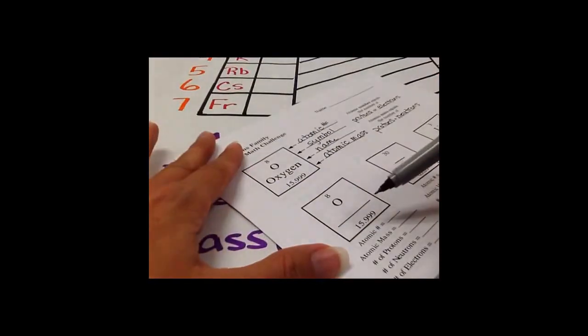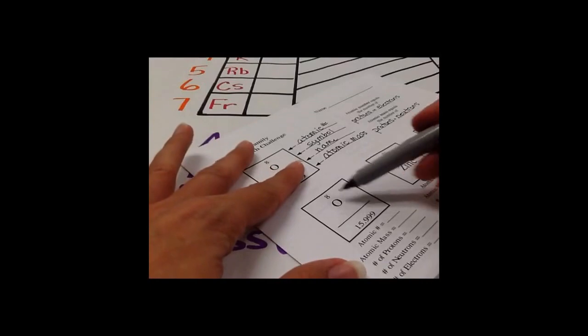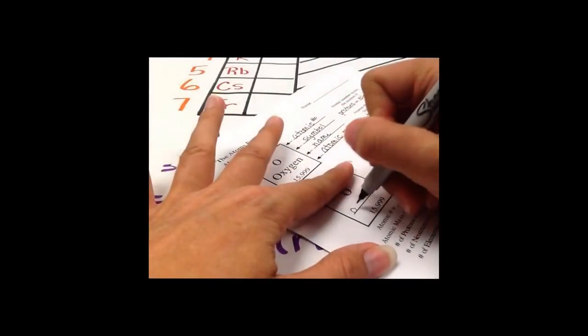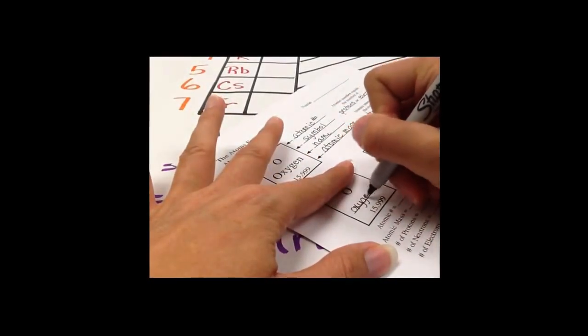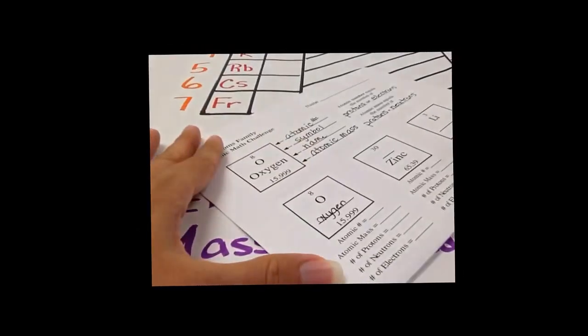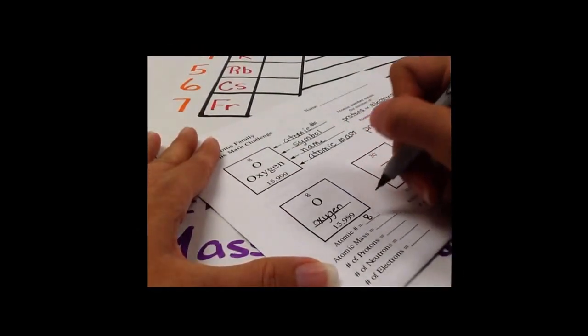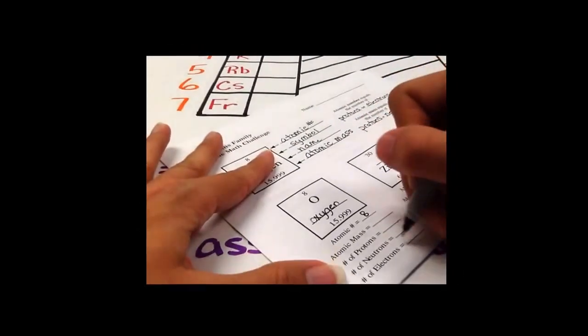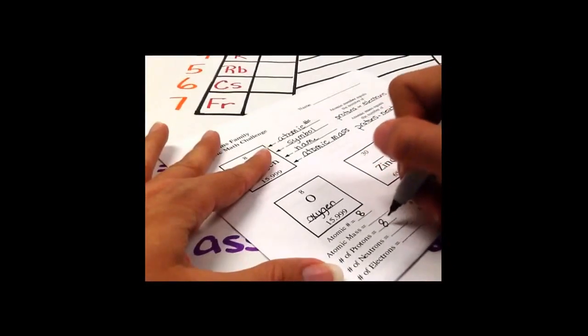Okay, here's our next element cube. Alright, we know that this is oxygen. We know the atomic number is 8, so therefore my protons and electrons are what? 8.